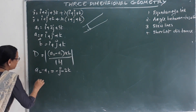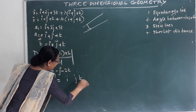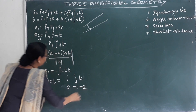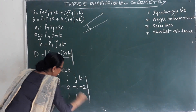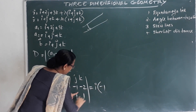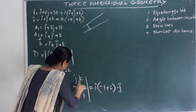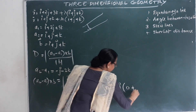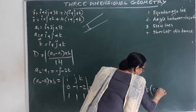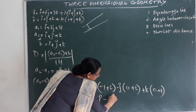We compute the cross product (A2 minus A1) cross b. Setting up the determinant with i, j, k in the first row, the components 0, minus 1, minus 2 in the second row, and 1, 1, 1 in the third row. Expanding: i times (negative 1 plus 2), minus j times (0 plus 2), plus k times (0 minus minus 1).